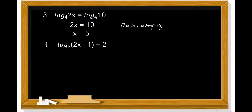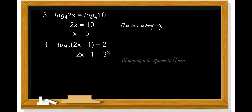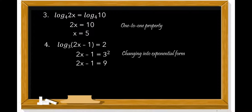Number 4: log base 3 of (2x minus 1) equals 2. We change this logarithmic form into exponential form, wherein 3 is the base and 2 is the exponent, so 2x minus 1 equals 3 squared. Since 3 squared equals 9, we have 2x minus 1 equals 9. Transposing negative 1, 2x equals 9 plus 1, which equals 10. Dividing both sides by 2, x equals 5.